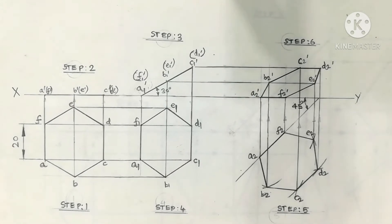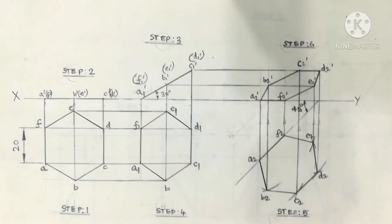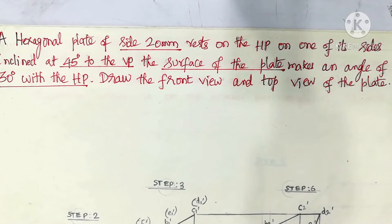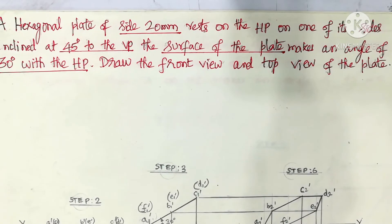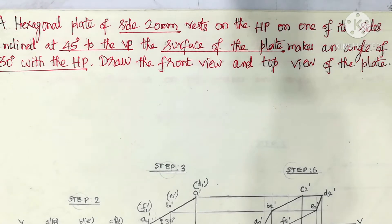Procession of Planes. Consider a question regarding the procession of planes. A hexagonal plate of side 20mm rests on the HP on one of its sides, inclined at 45 degrees to the VP. The surface of the plate makes an angle of 30 degrees with the HP. Draw the front view and top view of the plate.